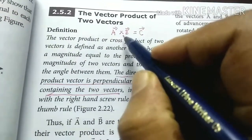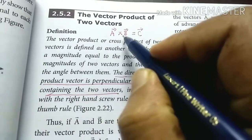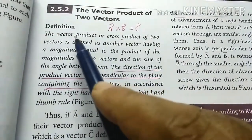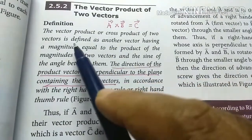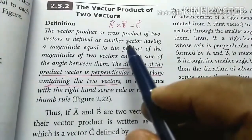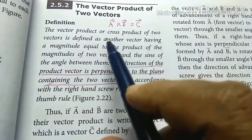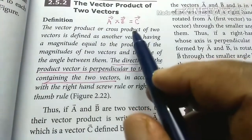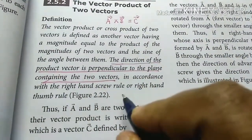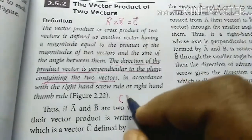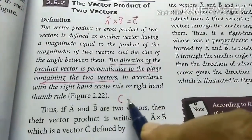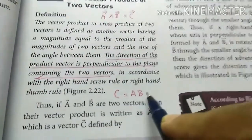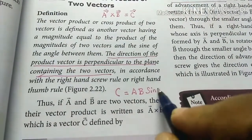Otherwise, we call it a cross product. If we go to the definition, the vector product or cross product of two vectors is defined as another vector. The magnitude of the resultant vector C is defined as the product of the magnitudes of the two vectors and the sine of the angle between them.